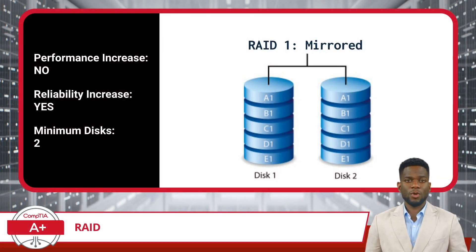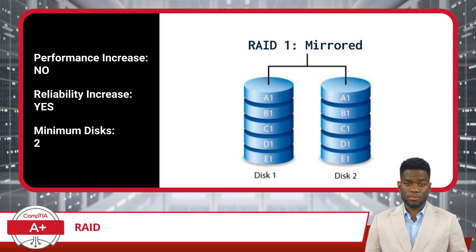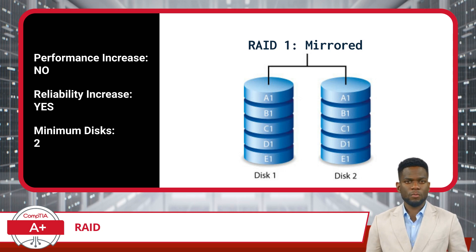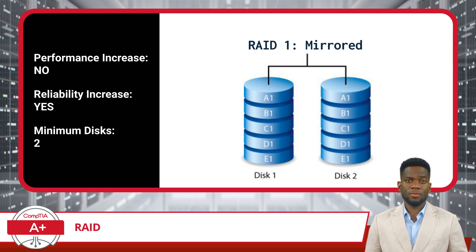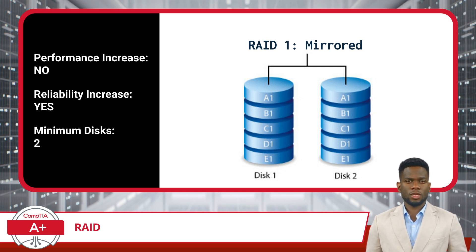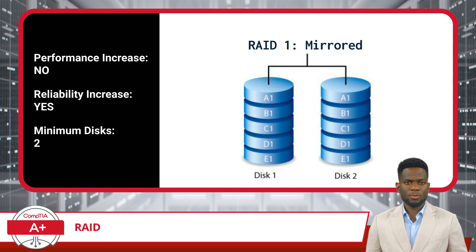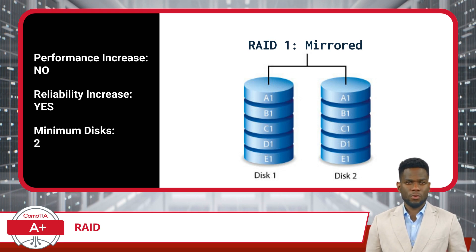Our next RAID level, RAID 1, operates like a mirror. Data is duplicated or mirrored across two disks, ensuring that if one fails, the other retains all the data. While this type of RAID configuration offers redundancy, it doesn't enhance performance in the way RAID 0 does.